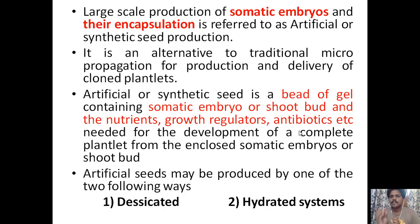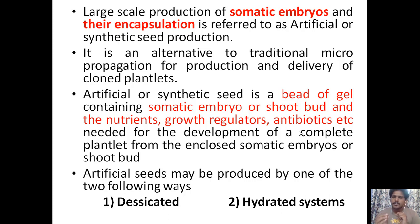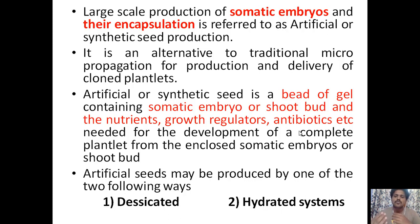This is an alternative to traditional micropropagation for production and delivery of cloned plantlets. An artificial or synthetic seed is a bead of gel containing a somatic embryo or shoot bud, along with nutrients, growth regulators, antibiotics, etc., needed for development of the complete plantlet. Artificial seeds can be produced by two methods: desiccated systems and hydrated systems.